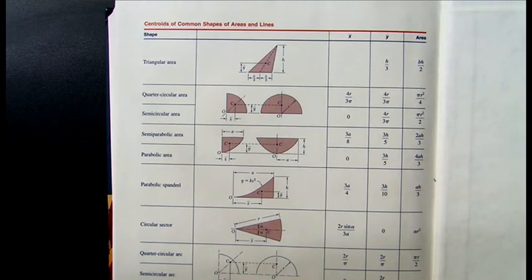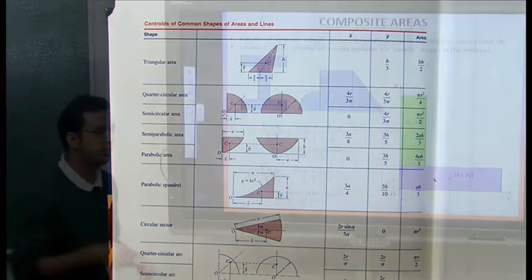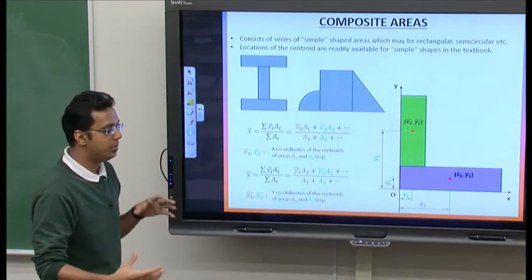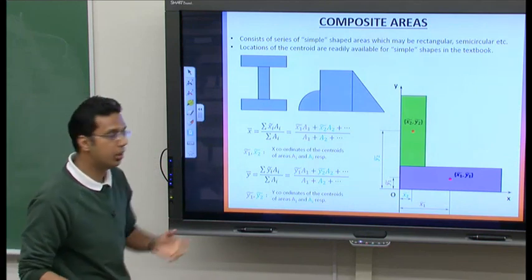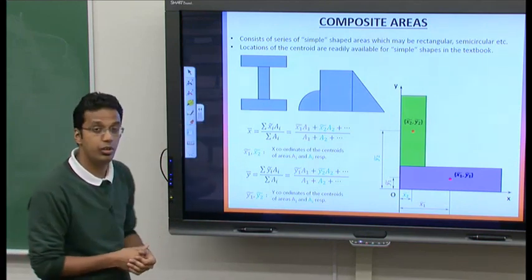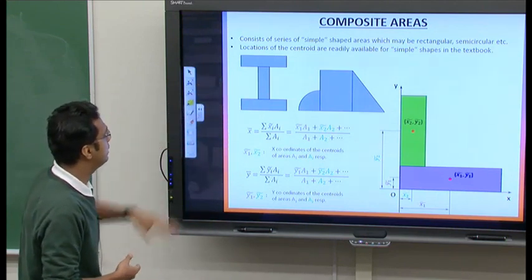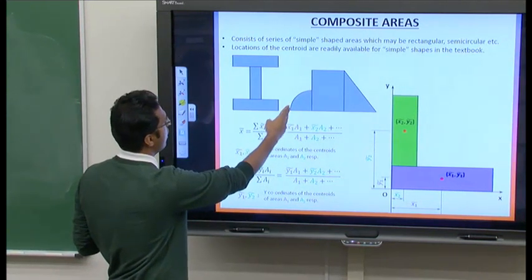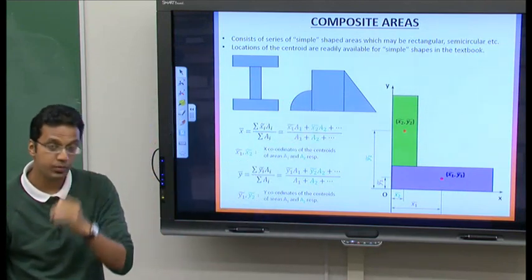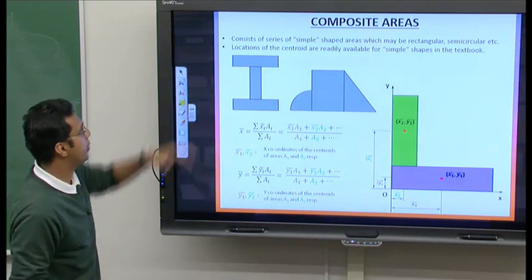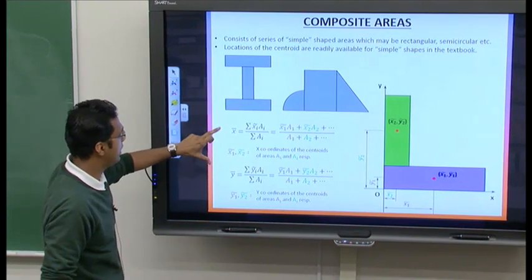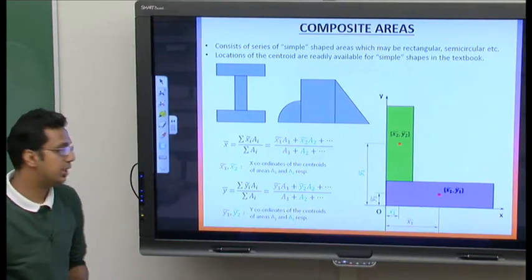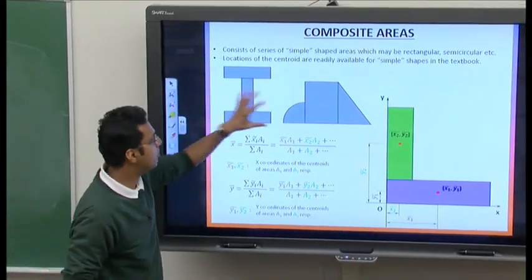One step beyond simple areas are composite areas, which are nothing but two or more simple-shaped objects combined together. For example, the I-section consists of three rectangles combined together. Another composite area example is formed by combining a quarter circle, a rectangle, and a triangle. To find the centroid of a composite area, we use two formulas for x̄ and ȳ — the x and y coordinates of the center of the entire composite area.